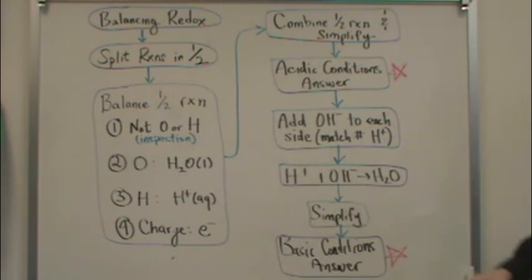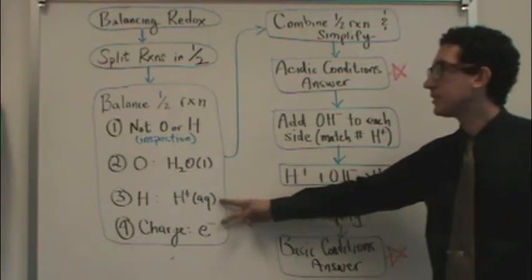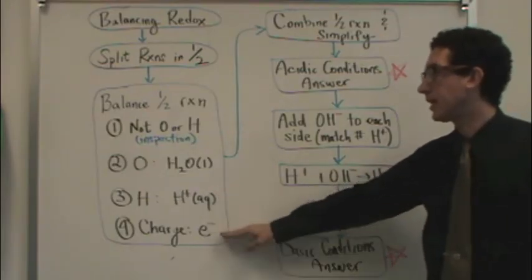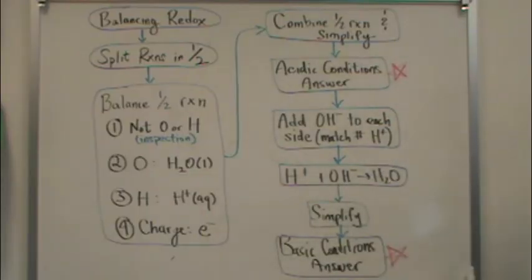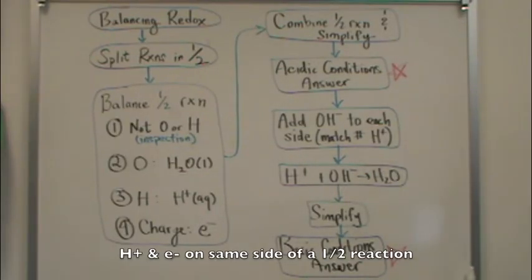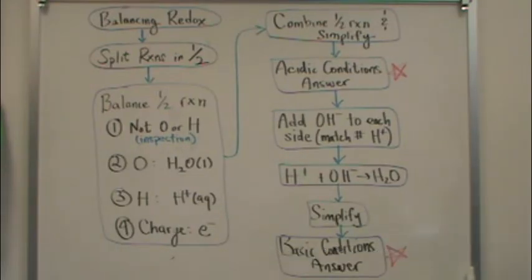Now, one more thing about this. Sometimes students, a common mistake is not being sure which side to put the electrons on. Do you put them in the reactants or the products? In every half reaction I've ever seen, the H plus and the e minus, the charge electron, are going to be on the same side. So you might want to write that down. H plus and electrons are most likely going to be on the same side.